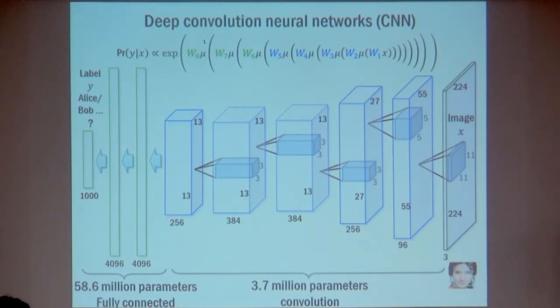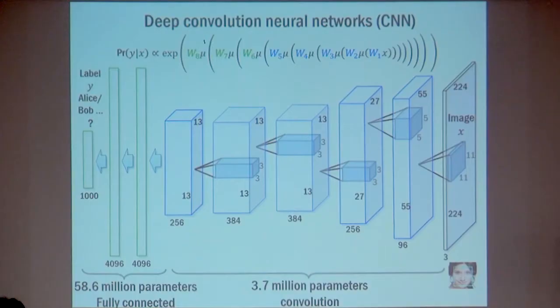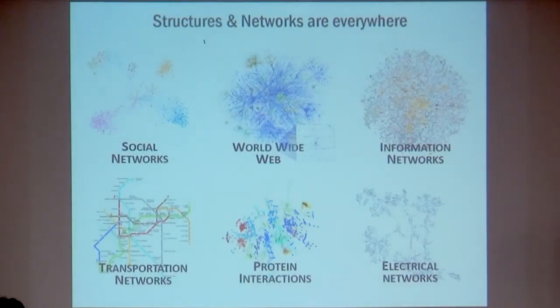I started thinking: are there other places where you have a lot of structure, and you want to define your function class using that structure to achieve very good performance? We know another highly structured function class, which is convolutional and recurrent neural nets — you can think about Markov or hidden Markov model type structure in your data and use recurrent neural nets. But in reality, there are many other data types with highly irregular structure.